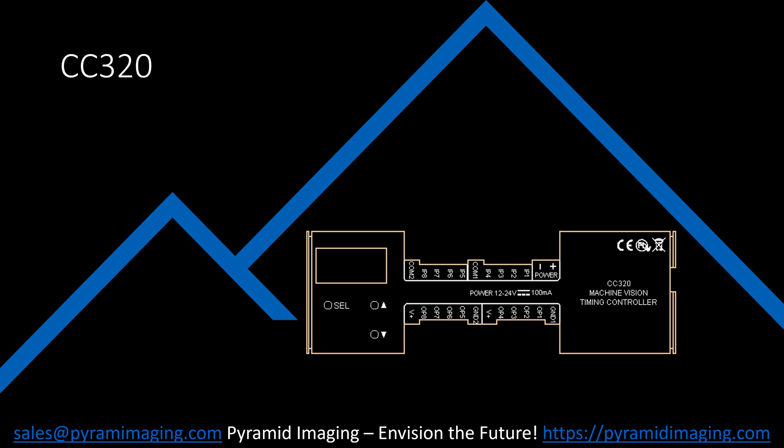The CC320 has eight optocoupled inputs and eight optocoupled outputs. They are divided into groups of four, which share a common ground node. The outputs are open drains. Two low power logical high outputs are provided to feed pull-up resistors.